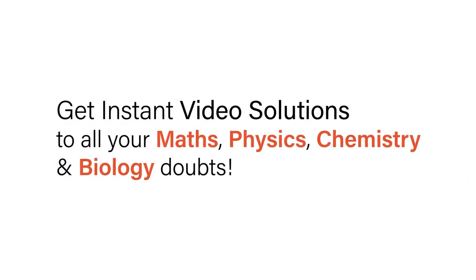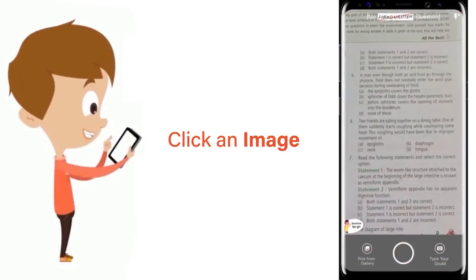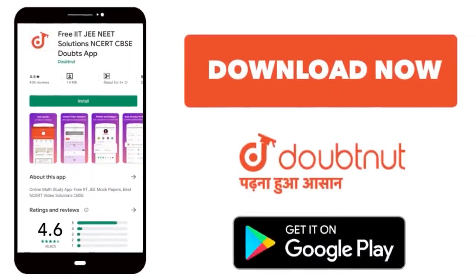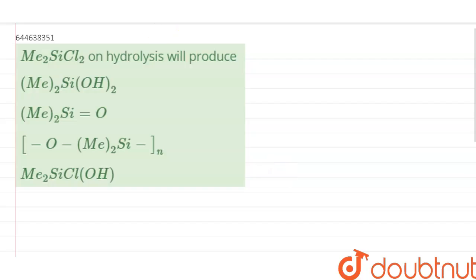With Doubtnut, get instant video solutions to all your maths, physics, chemistry, and biology doubts. Just click the image of the question, crop the question, and get instant video solution. Download Doubtnut app today. Hello friends, the question is: Me2SiCl2 on hydrolysis will produce.